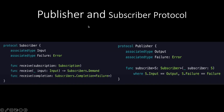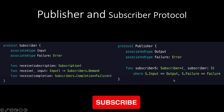Now let's look at the publisher and subscriber protocols. The subscriber protocol has an associated type input and an associated type failure, and it has three methods for receiving input and for receiving the completion event. The publisher protocol has an associated type output and an associated type failure, with one method that accepts a subscriber — the input of the subscriber must match the output of the publisher, and the failure of the subscriber must match the failure of the publisher.